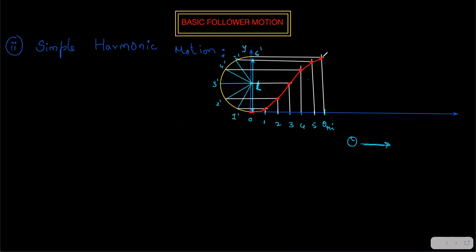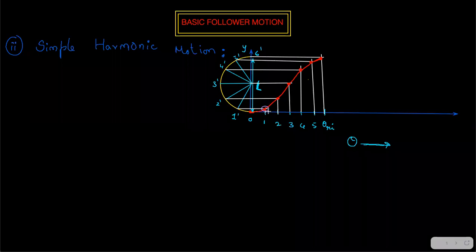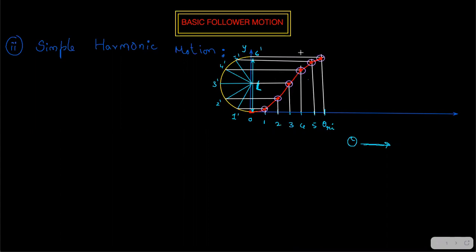This is your simple harmonic motion curve. You can imagine it such that these points are the trace of the roller center. As the cam rotates, the roller goes up gradually to the final lift position. This is the position of your roller itself — the cam is lifting the follower from zero as theta rotates through its angle.